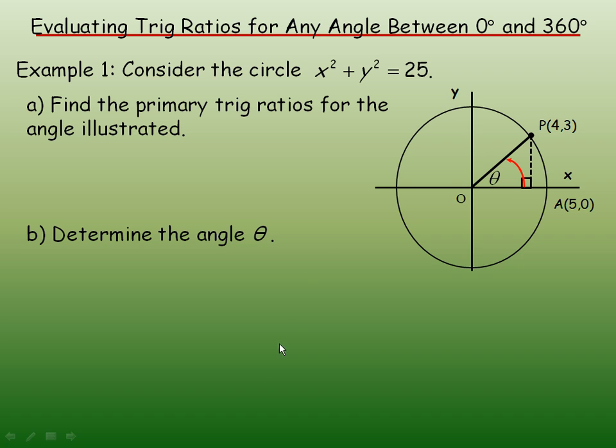Now, in the diagram here, the radius is 5. And if you look at the diagram, since P is the point 4, 3, that means that this side would be 4. And since the y-coordinate is 3, the dotted line here would be 3 units.